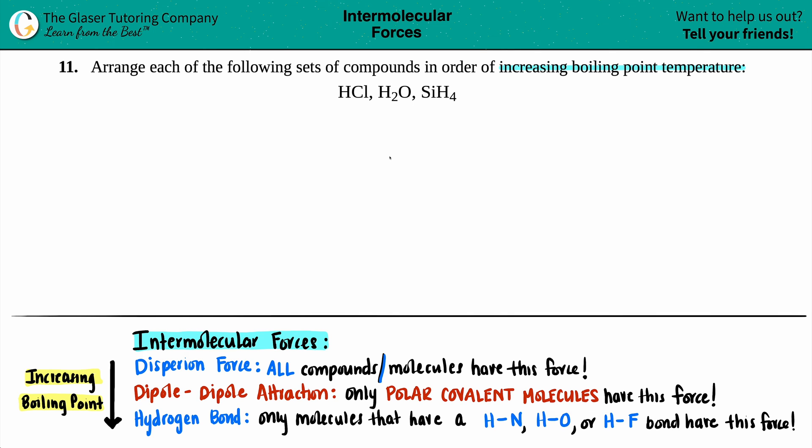We have to arrange these in terms of increasing boiling point. Just know that if you're arranging something from increasing or decreasing boiling point, boiling points are very closely linked to intermolecular forces. The forces that exist between two of the same molecules. We need to know all about these intermolecular forces. The three that we need to know are dispersion forces, dipole-dipole, and hydrogen bonding.